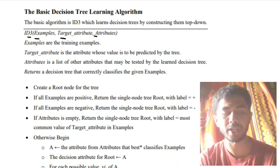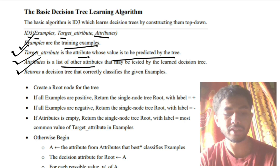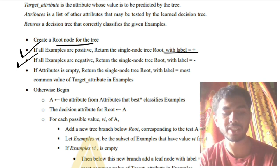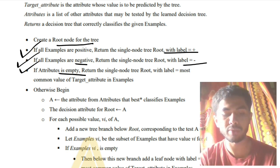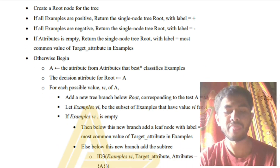In the ID3 algorithm you consider three things: examples, target attribute, and attribute. 'Examples' are the training examples; 'target attribute' is the attribute whose values are to be predicted by the tree; 'attribute' is a list of other attributes present. It returns a decision tree that correctly classifies the given examples. First step: create a root node. If all examples are positive, return positive. If all are negative, return negative. If the attribute list is empty, return the most common value of the target attribute.